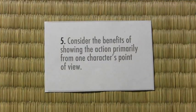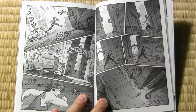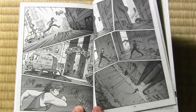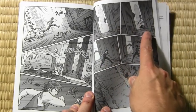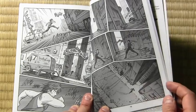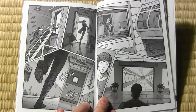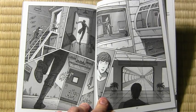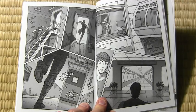Number five: consider the benefits of showing the action primarily from one character's point of view. This is from Brody's Ghost, book five — the finished pages I showed earlier in rough sketch form. Clearly we're seeing most everything from Brody's point of view. Suddenly switching to the police car's point of view might be disorienting. I'm not saying you should always tell every action sequence from one character's point of view, but it can be helpful in terms of not losing the reader and helping them identify with the protagonist.